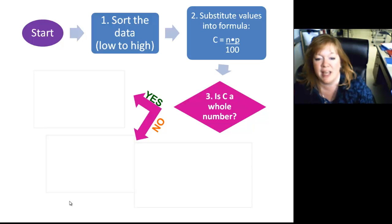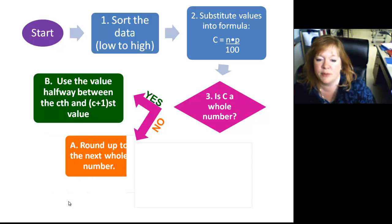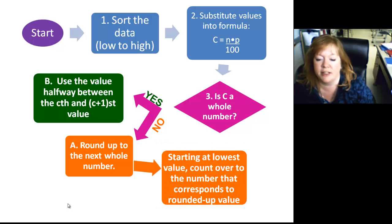If it is yes, if C is a whole number, what you do is you use the value halfway between the Cth value and the C plus 1 value. If it is not a whole number, that one's actually easier. You round up to the next whole number and starting at the lowest value, count over to the number that corresponds to the rounded up value. Alright, that's it for these notes and I will see you tomorrow.